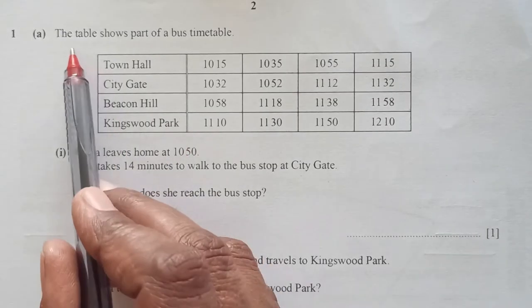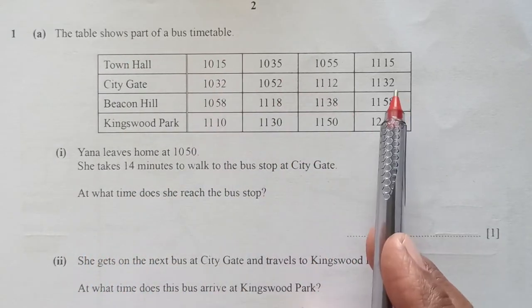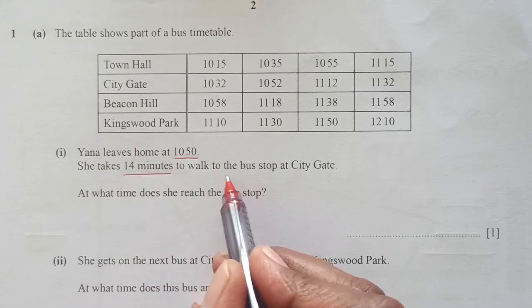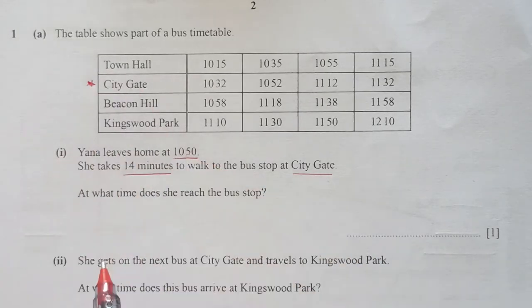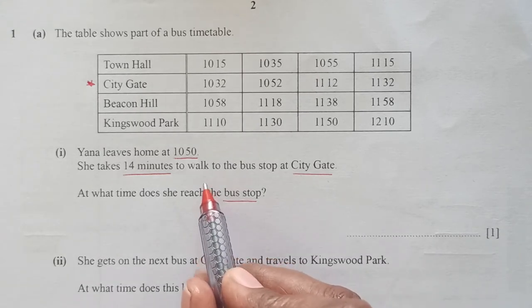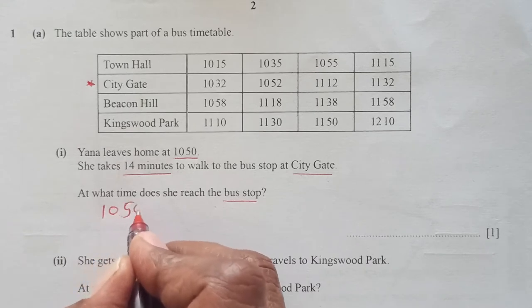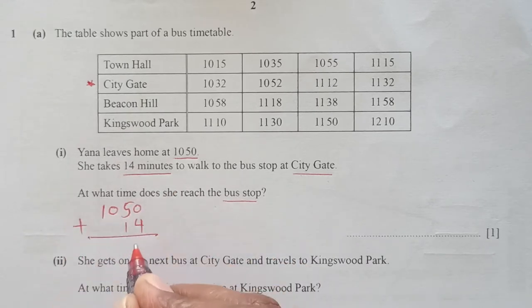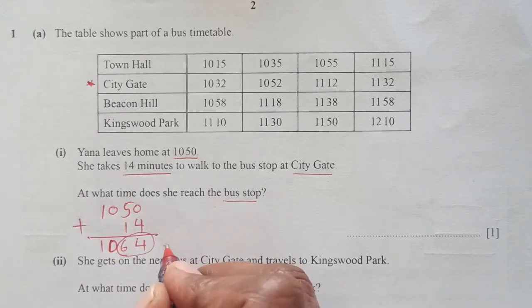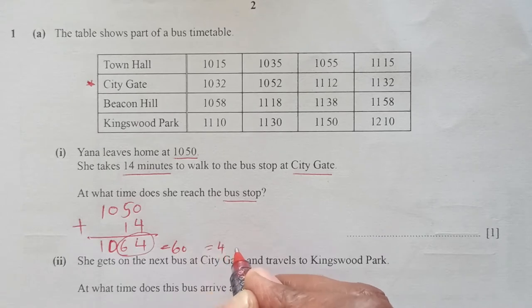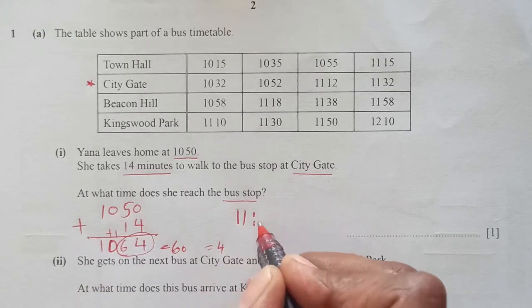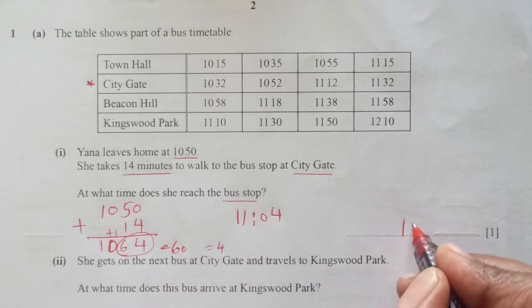Question 1. The table shows part of a bus timetable. Part 1: Yana leaves home at 10:50 and takes 14 minutes to walk to the bus stop at City Gate. At what time does she reach the bus stop? 10:50 plus 14 minutes gives 10:64, which is more than 60 minutes. Subtract 60 and carry 1 hour, giving 11:04. She will reach the bus stop at 11:04.